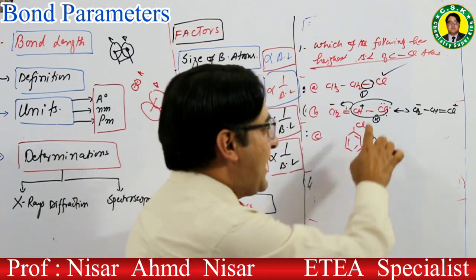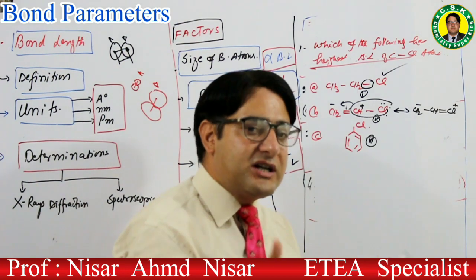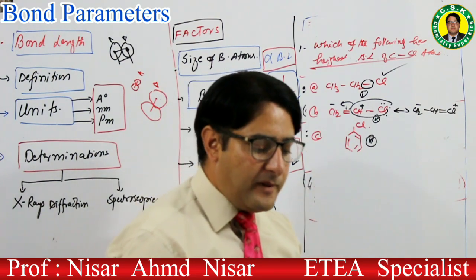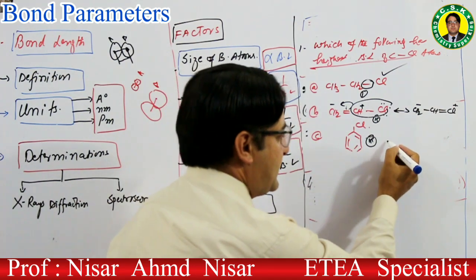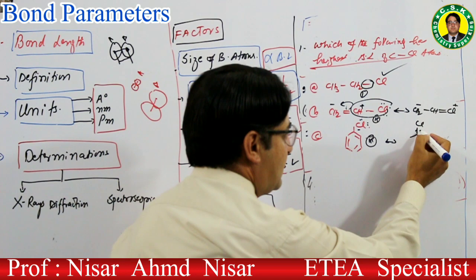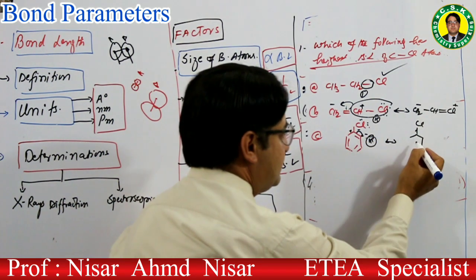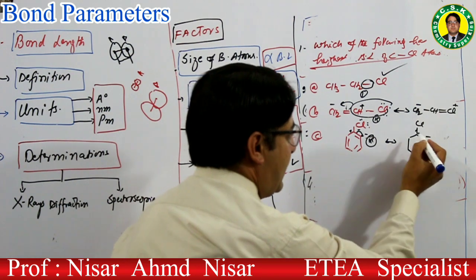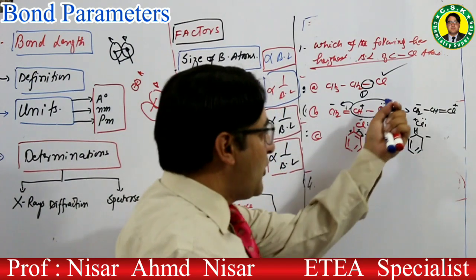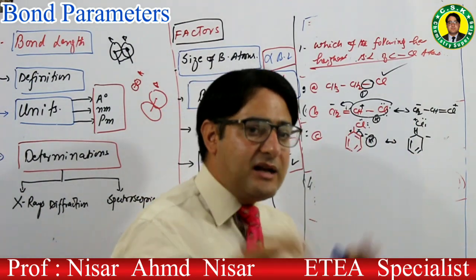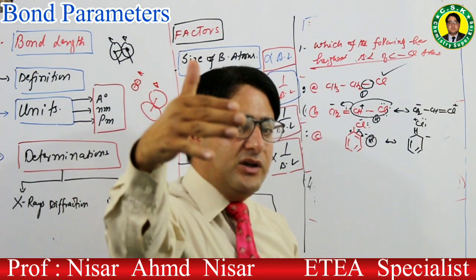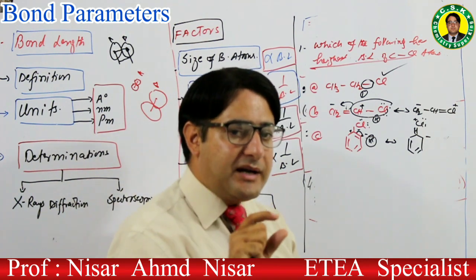Resonance آنے سے یہ bond perfectly single نہیں رہے گا — partial double ہو جائے گا، تو double bond shorter ہوا کرتا ہے۔ Benzene میں بھی resonance ہے — لیکن یہاں rule یہ ہے: جس کی resonating structures زیادہ ہوں گی، اس میں double bond character زیادہ ہوگا۔